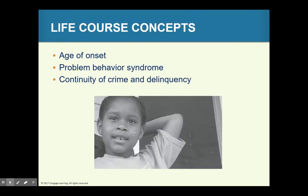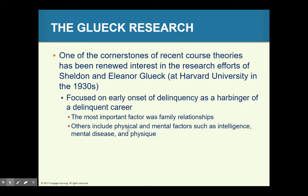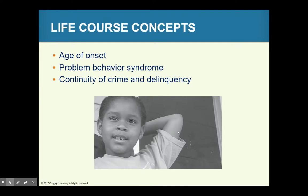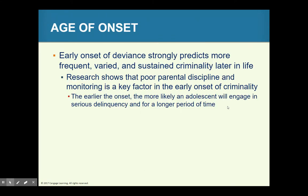Moving into life course concepts, there are a number of key concepts that help define the life course view: age of onset, problem behavior syndrome, and continuity of crime and delinquency. Age of onset refers to the view that kids who begin engaging in antisocial behaviors at a very early age are the ones most at risk for a delinquent career.